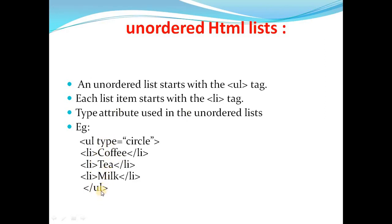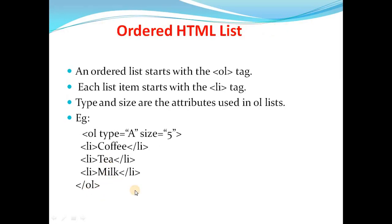After writing the list items, close the UL tag. Next comes the ordered HTML list. The ordered list starts with the OL tag, each list item starts with the LI tag, and the attributes used are type and size. For example, opening the OL tag with type 'a' and size 5 means the numbering starts from a, b, c, d, e — and from 'e' it starts listing coffee, tea, and milk.